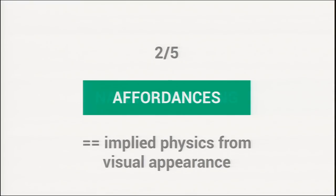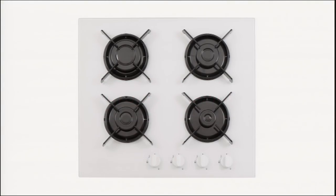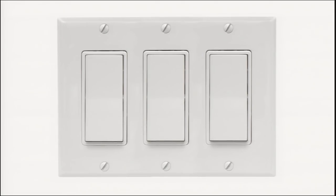Moving on to the third: natural mapping. Let's run a quick experiment on the audience. Looking at a stove — which burner does the second dial control? Silence — you don't know, because there's no way to figure it out. We could write the glyphs on top of it, but writing your manual directly on the product is cheating. A better UI — something Alan Cooper talks about — is if the dials are in the same configuration as the four burners, then it just naturally affords which burner they control. This is also always true of light switches. Light switches are only frustrating when they don't map in order to the lights in the room. If they do map, you flip the right one without thinking. A natural mapping is correctly abstracted layout.